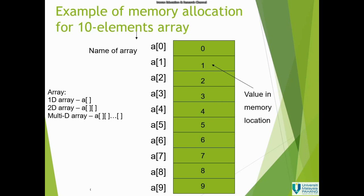Some languages start from 1 depending on the language, but for C and C++ the standard is to start from 0. For each index we can put any data — in this case 'a' is an integer array so the data should be integers. For one declared array, only one data type is allowed; we cannot mix types such as putting a double inside an integer array — that would be a wrong syntax.